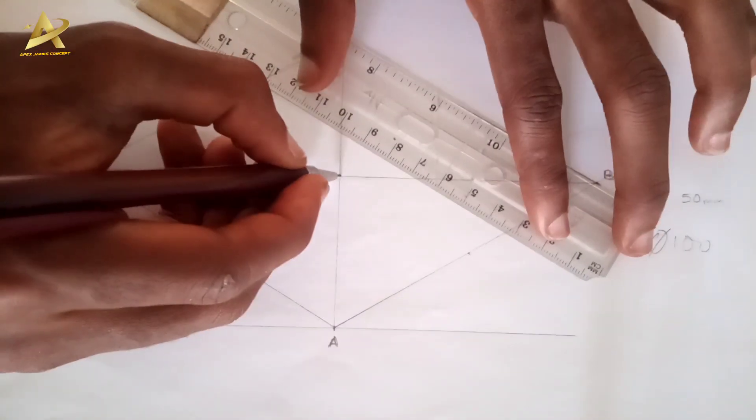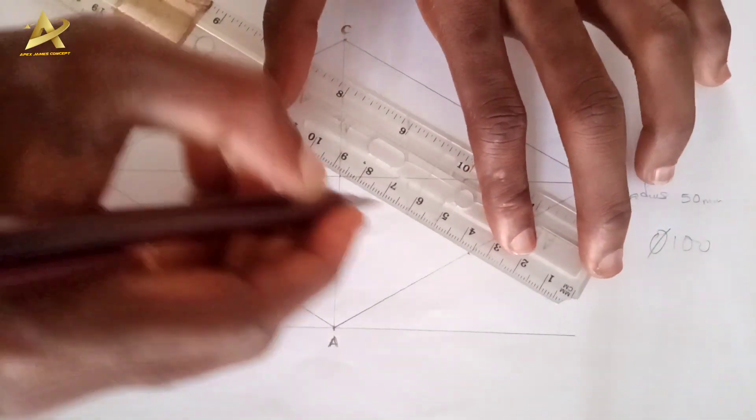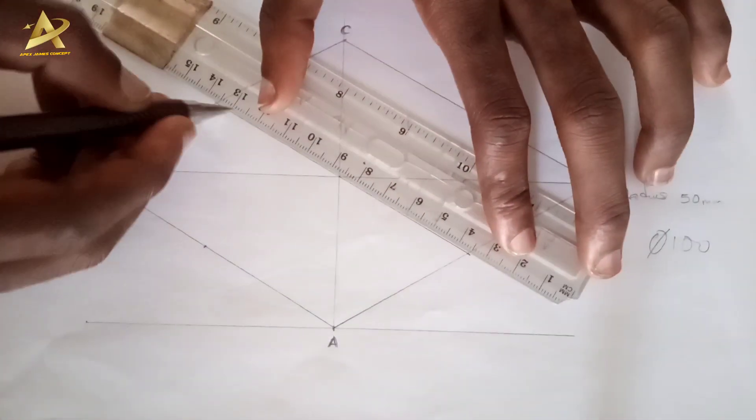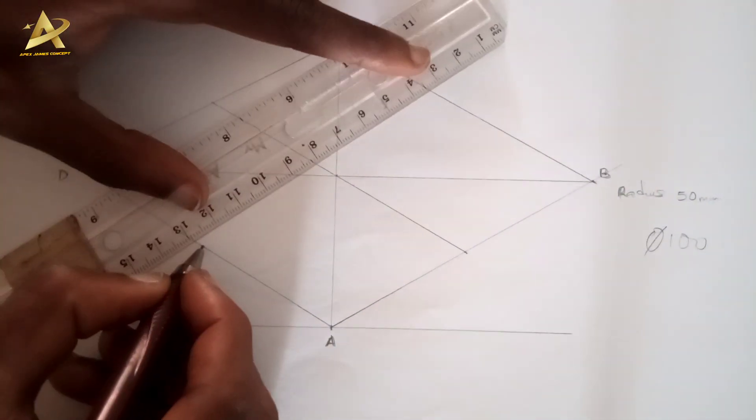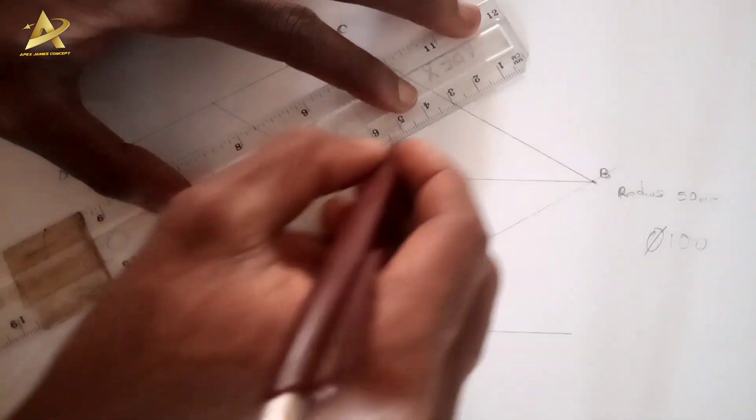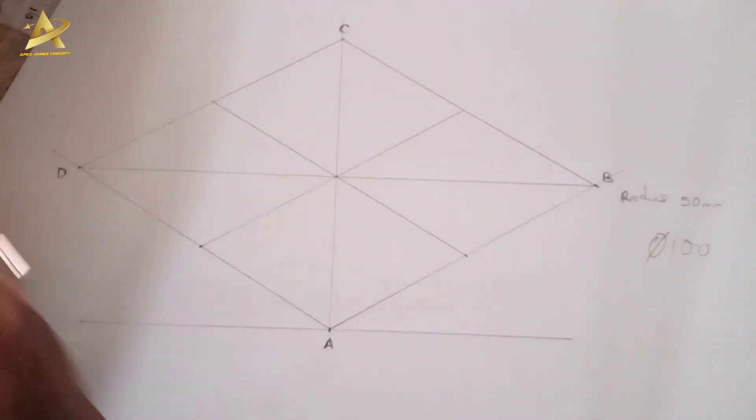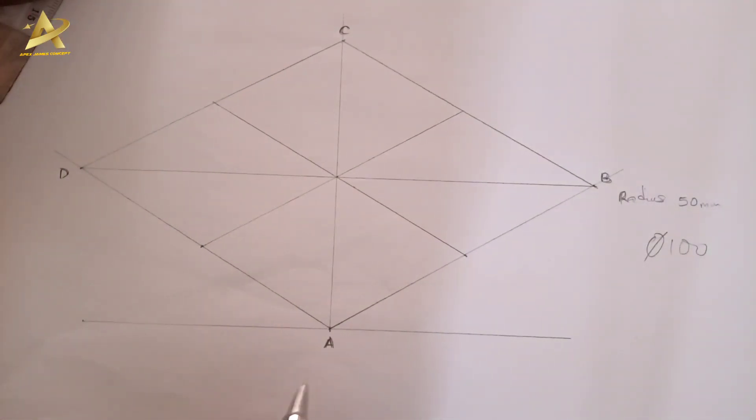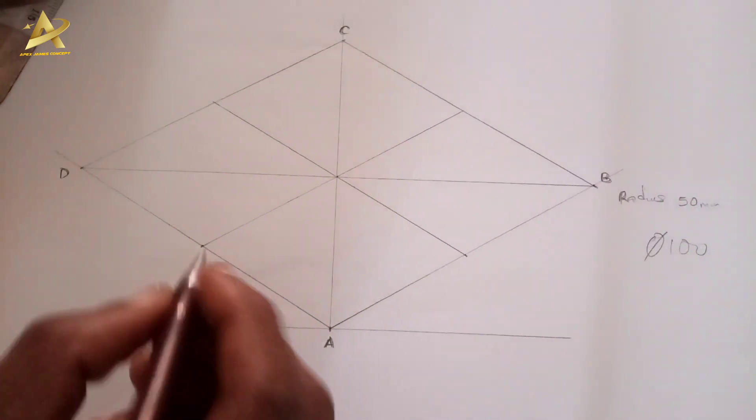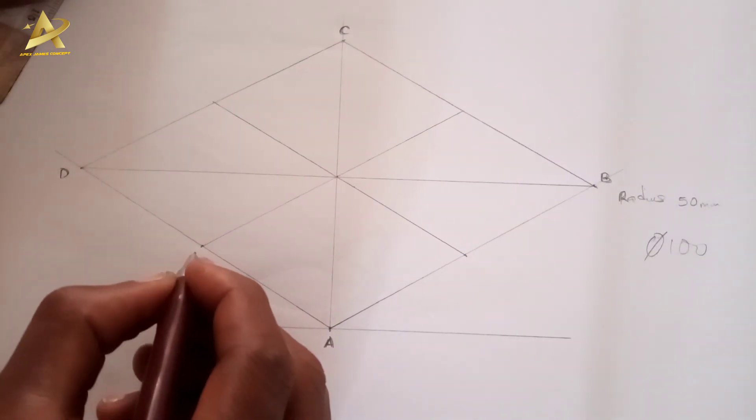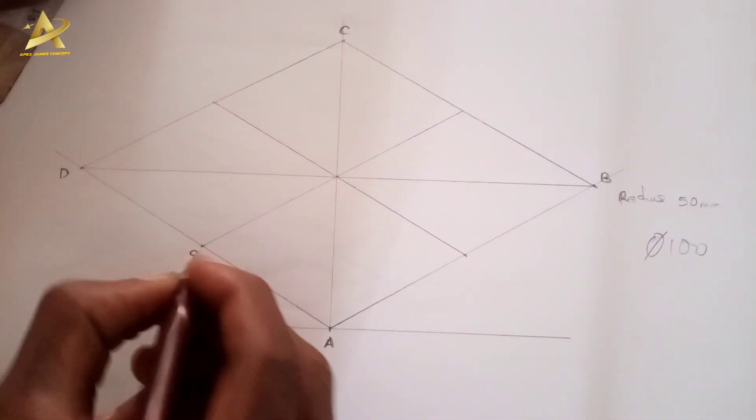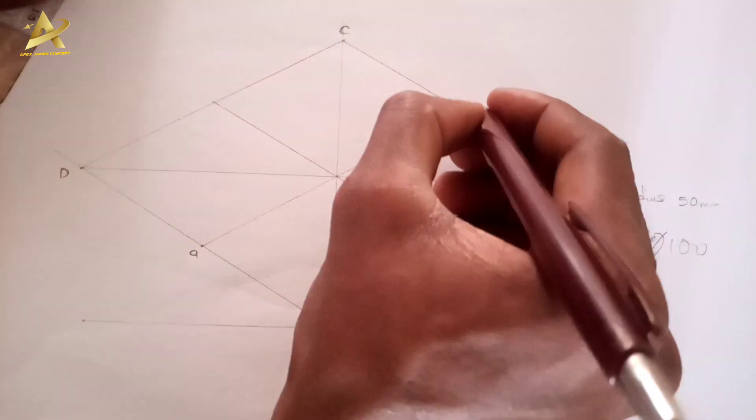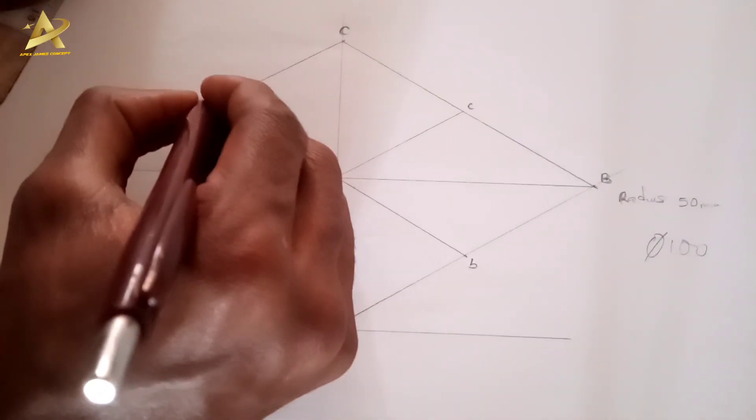Let's label this: here is capital letter A, then B, C, and D. And here small letter a, small letter b, small letter c, and small letter d.